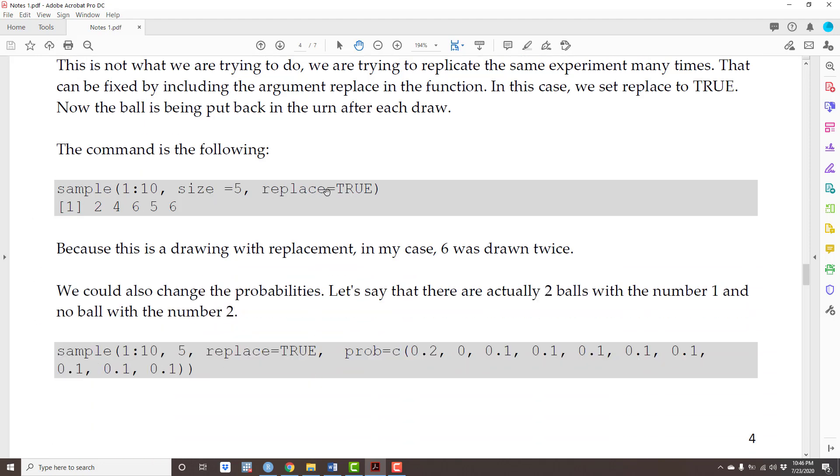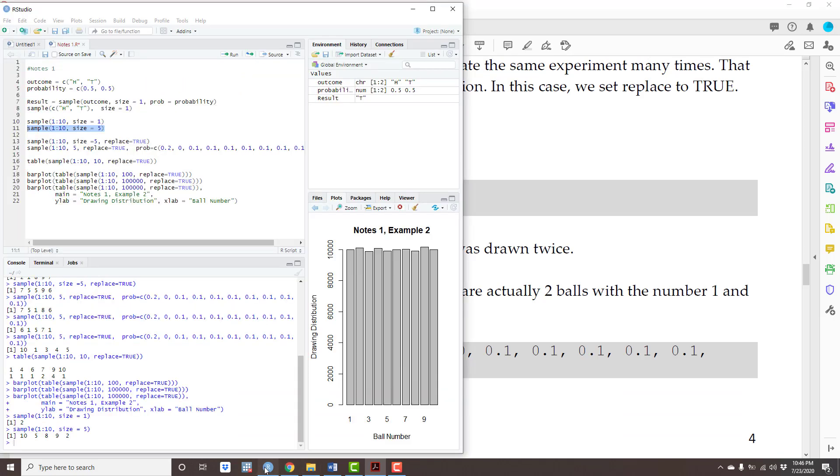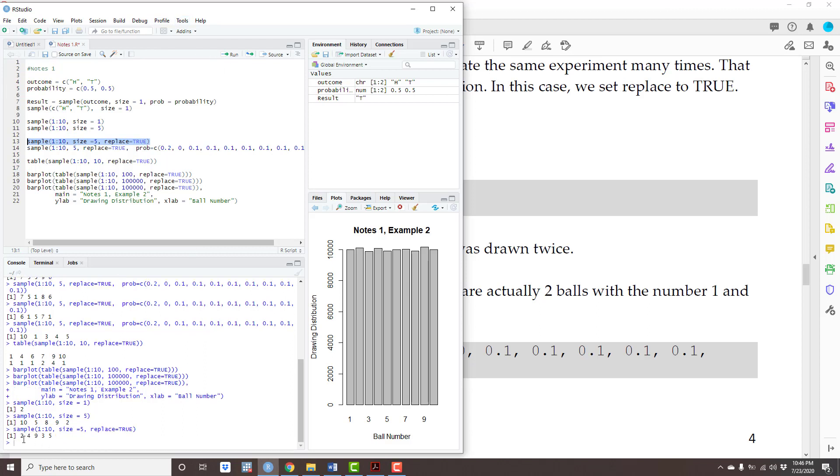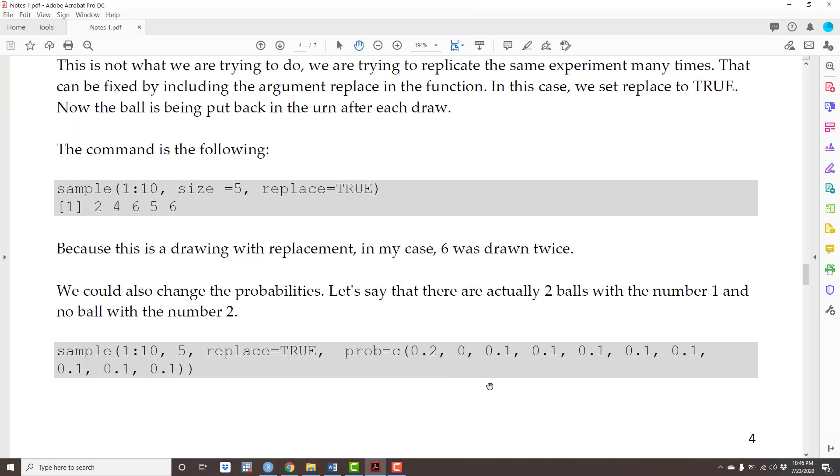So, let's repeat this but with replacement. Here, I have 2, 4, 9, 3, 5. Notice that when I was writing the notes, the number 6 was drawn twice. That's because now this is possible since the balls are being replaced.